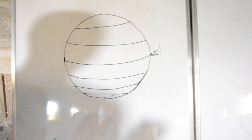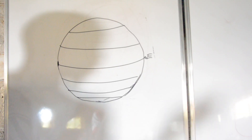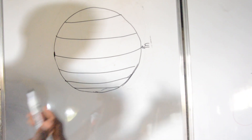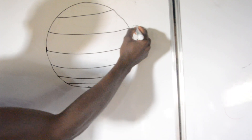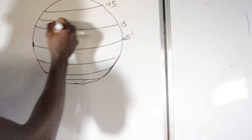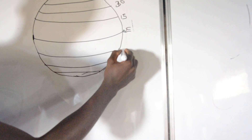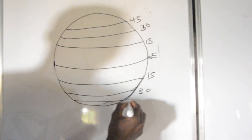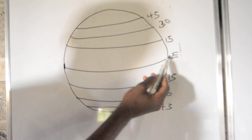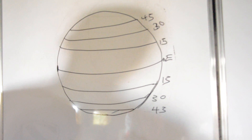All the other latitudes are small circles except the equator, which is the great circle. For example, from here to here we say it's 15 degrees, from here to here it's 30 degrees, and from here to here it's 45 degrees. So we have zero degrees, 15, 30, and 45 — those are the degrees.